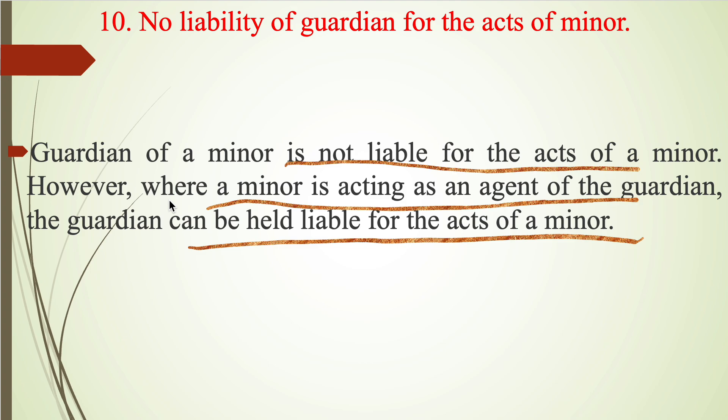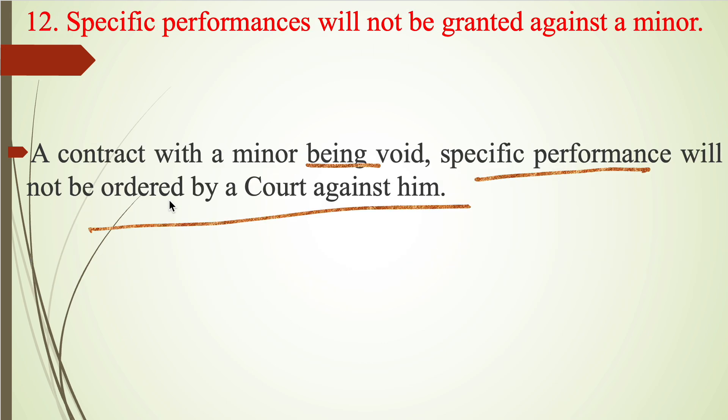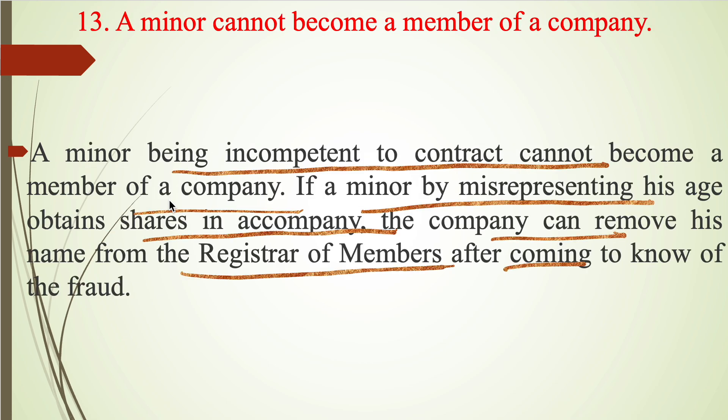There is no liability of the guardian for acts of the minor except when the minor acts as an agent of the guardian. A guardian may enter into an agreement on behalf of a minor, and such agreement is valid and binding. A contract with a minor being void, specific performance will not be ordered by a court against him. A minor is incompetent to do a contract and cannot become a member of a company.